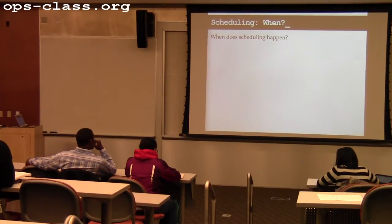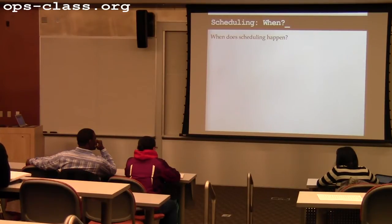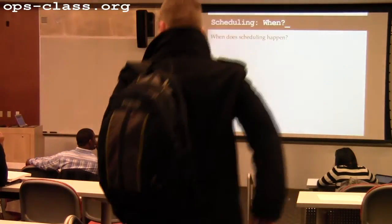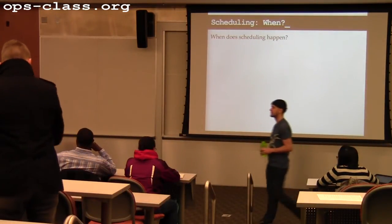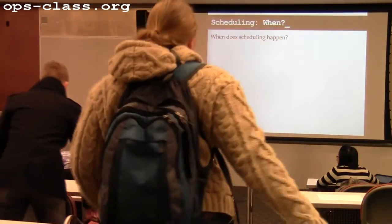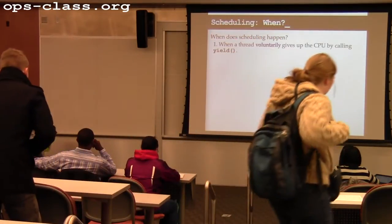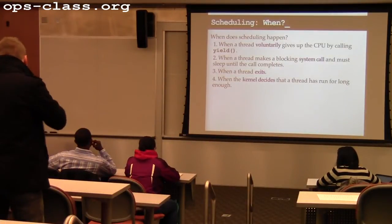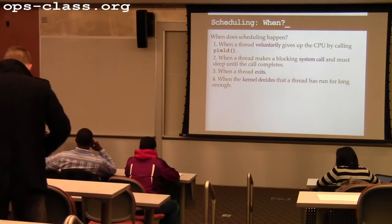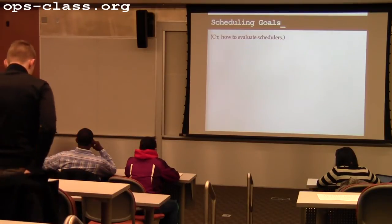When does scheduling happen? On interrupts specifically — yield, block, exit, or a timer interrupt. When the kernel decides the thread has run long enough, it uses a timer interrupt to forcibly remove it from the CPU.